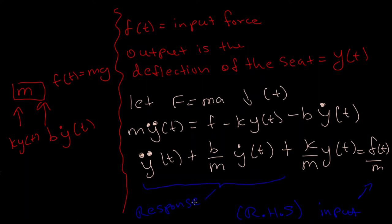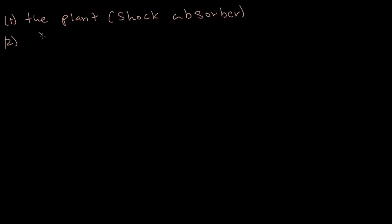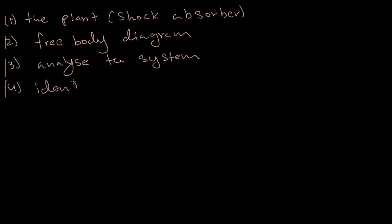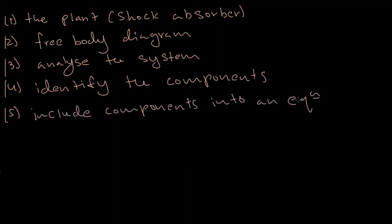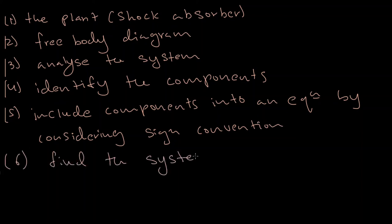Okay, let's summarize. We had the plant shock absorber. Then you draw the free body diagram. Analyze the system. Identify the components. Include the components into an equation by considering sign conventions. In this case, positive down. Find the system equations, which in this case we have two.